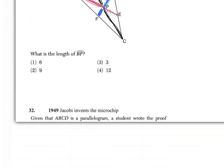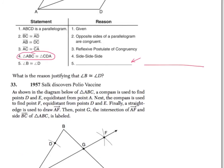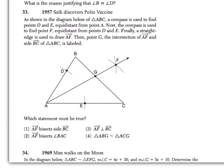Question 32 is asking you to give a missing piece in a proof. Once we know that the triangles are congruent, the parts have to be congruent — so you should know what goes there. We've done it a couple dozen times this year.